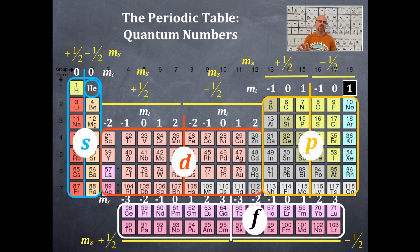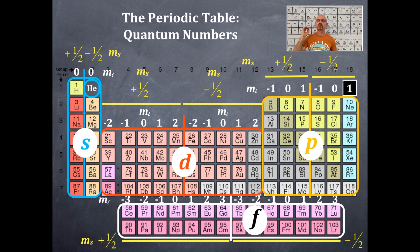Looking at this periodic table, you should be able to write all four quantum numbers based on the location of an element — as long as you're looking for the last electron in that atom. The N value, the L value, the M sub L, and the M sub S value are all right there. Location, location, location on the periodic table.